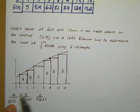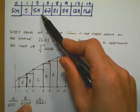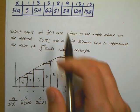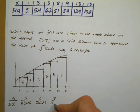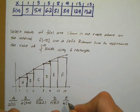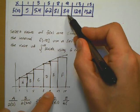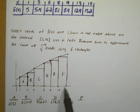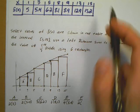Where I'm getting these values: the function's value at 1 is 5, at 3 is 5.4, and at 5 is 6.2 — all given in the table. For rectangle D, the width is 1 and the function's value at 8 is 8.1. For rectangle E, the width is 4 and the function's value at 9 is 8.9. For rectangle F, the width is 2 and the function's value at 13 is 12.9.